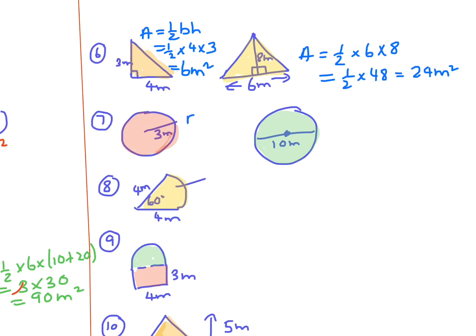Then we have the circles. For the area you need the radius. The radius of this one is 10 divided by 2, which is 5. The formula is area equals pi times radius squared. So it's pi times 3 squared, which equals 28.3 to one decimal place.